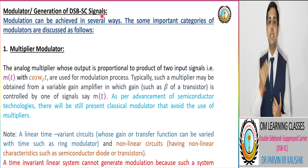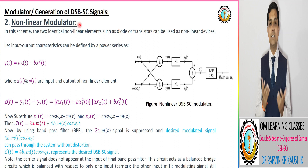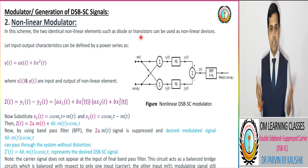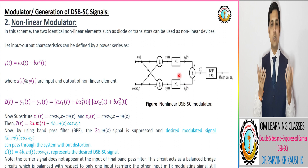After the multiplier modulator, we have another modulator that is the non-linear modulator. In the non-linear modulator, we utilize devices which have non-linear characteristics — a semiconductor diode or a transistor. The transistor has the advantage over the diode in that it not only provides non-linear characteristics but also provides amplification. So in non-linear modulators, transistors are most commonly utilized.